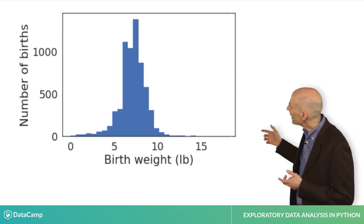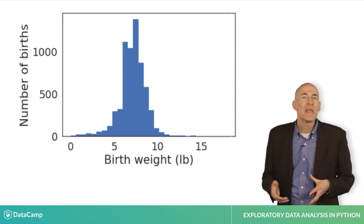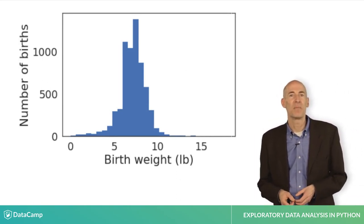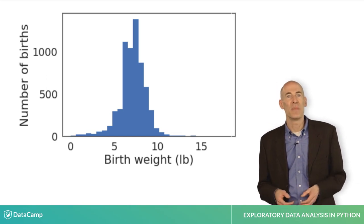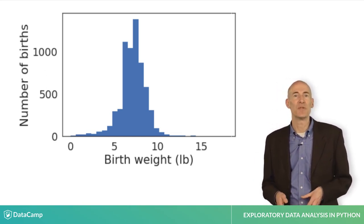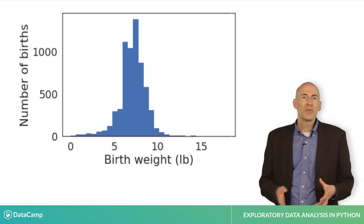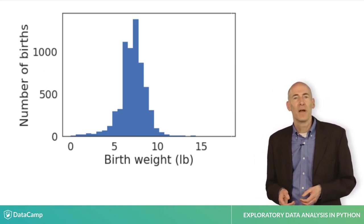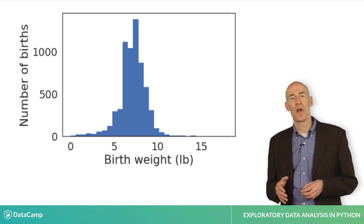And here's what the results look like. The x-axis is birth weight in pounds divided into 30 bins. The y-axis is the number of births in each bin. The distribution looks a little like a bell curve, but the tail is longer on the left than on the right.